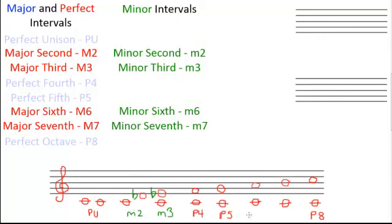Let's move on to our minor sixth. Our major sixth will now be lowered by a semitone. Here's our major sixth sounding like this. We'll lower it by a semitone to an A flat. Now we have a minor sixth, which sounds like this.